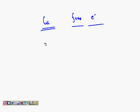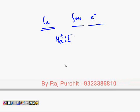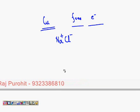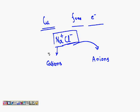Similarly, we had considered the formation of sodium chloride, that is NaCl. Here there are positive kind of particles — that is sodium ions — and negative kind of particles — that is chloride ions. These positive particles we call cations, and the negative particles we call anions.